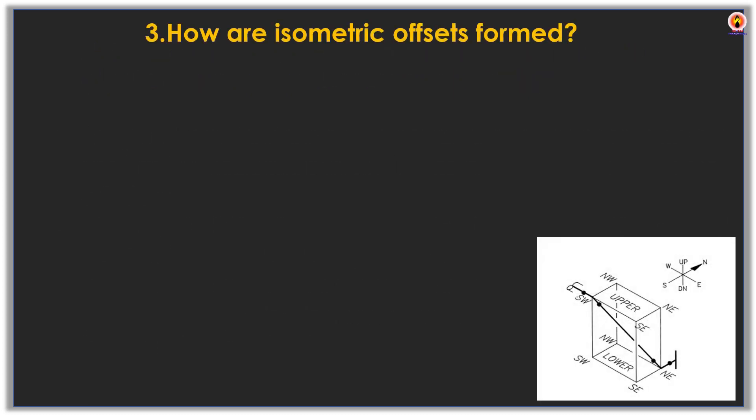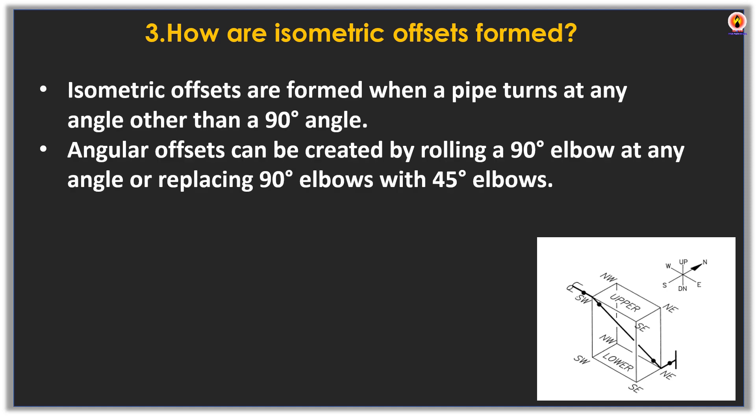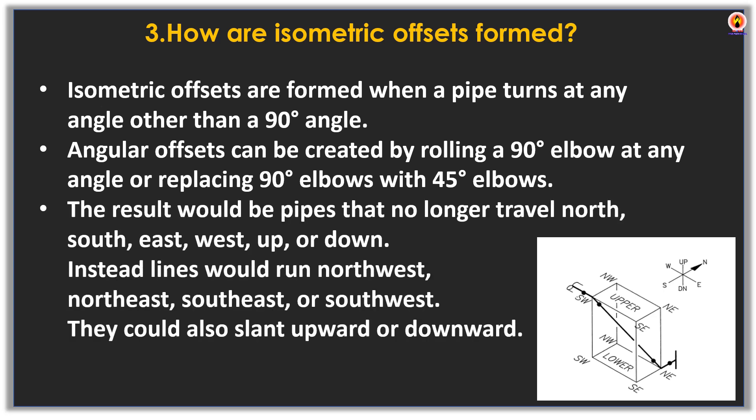Isometric offsets are formed when a pipe turns at any angle other than a 90-degree angle. Angular offsets can be created by rolling a 90-degree elbow at any angle, or by replacing 90-degree elbows with 45-degree elbows. The result is pipes that no longer travel north, south, east, west, up, or down — instead, lines would run northwest, northeast, southeast, or southwest, and could also slant upward or downward.